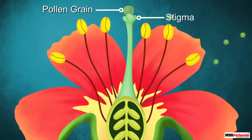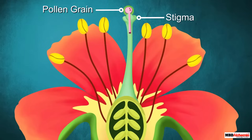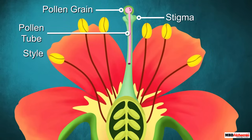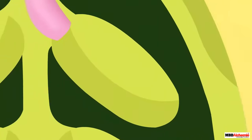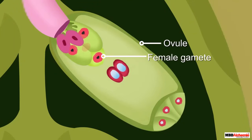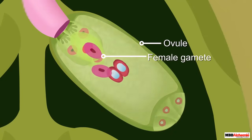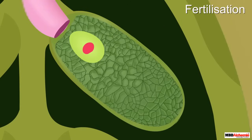Once a pollen grain reaches the stigma of a suitable flower, a tube grows from the pollen grain. This tube travels through the style and reaches the ovary. The male gamete from the pollen travels in this tube and reaches the female gamete present in the ovule of the ovary. After that, the male and female gametes fuse together to form the zygote. This process of fusion of male and female gametes is called fertilization.